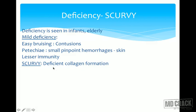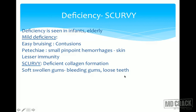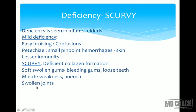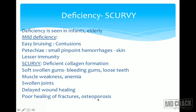In frank scurvy, there is deficient collagen formation leading to soft, swollen, bleeding gums and loose teeth. Because collagen forms the osteoid matrix of bone, there is also bone involvement, muscle weakness, anemia, and swollen joints due to bleeding. Delayed wound healing, poor healing of fractures, and osteoporosis are characteristic features of scurvy.